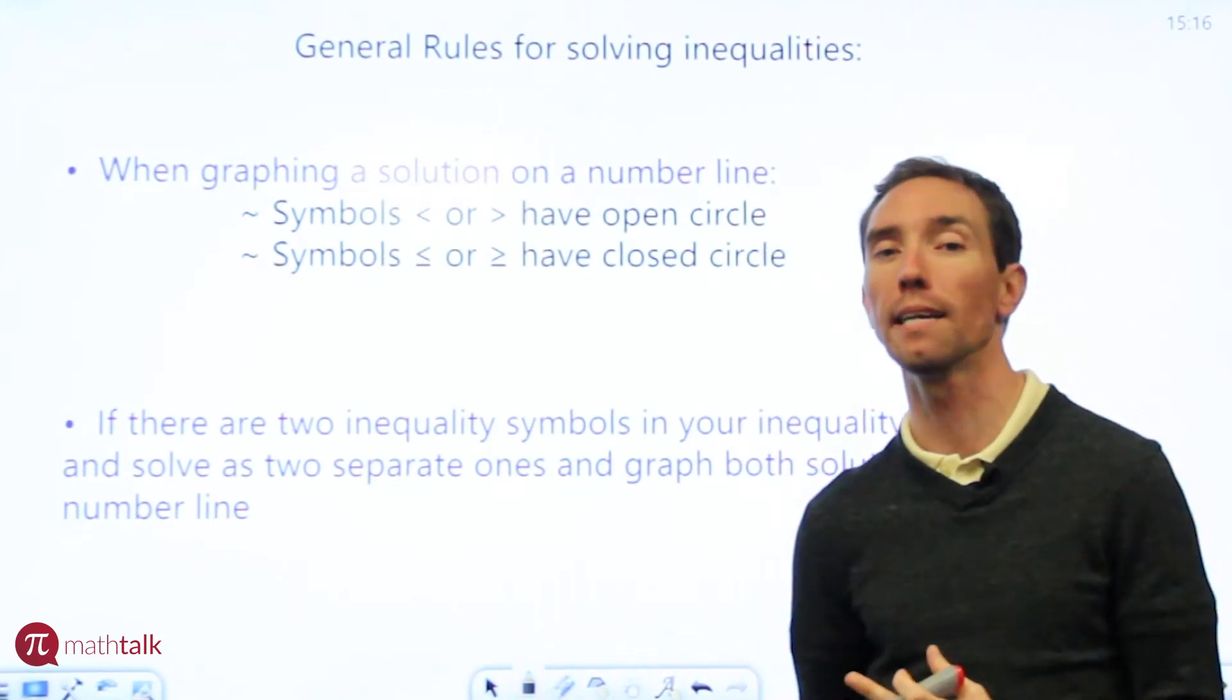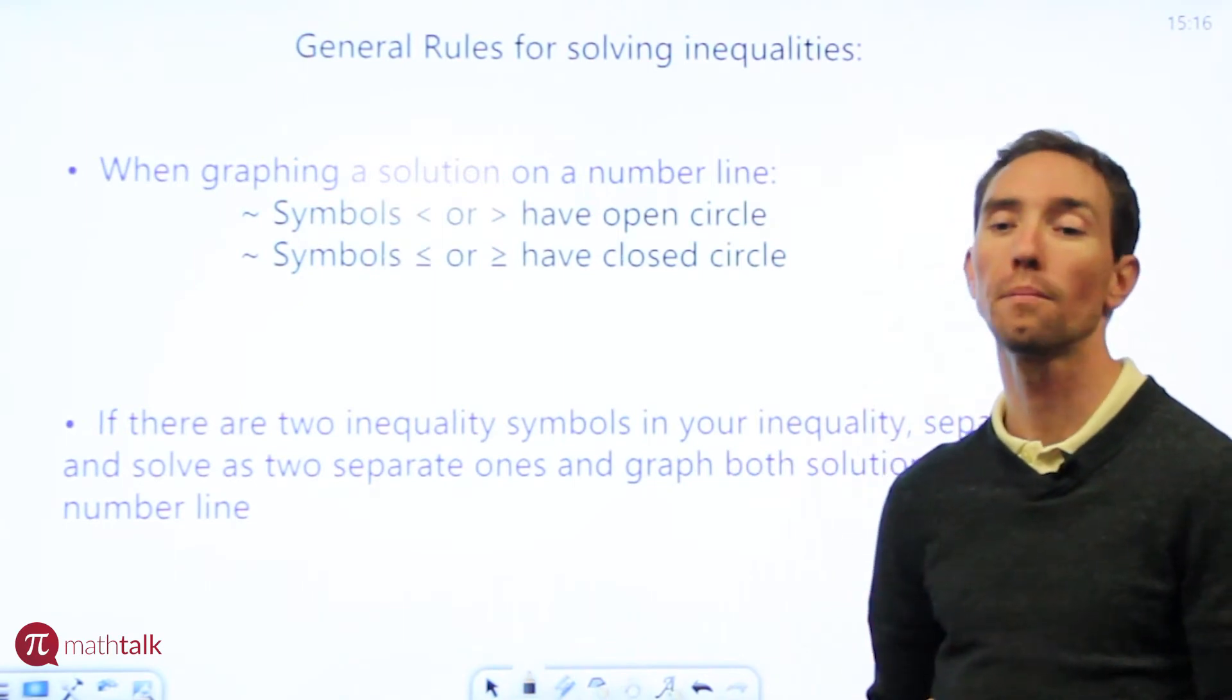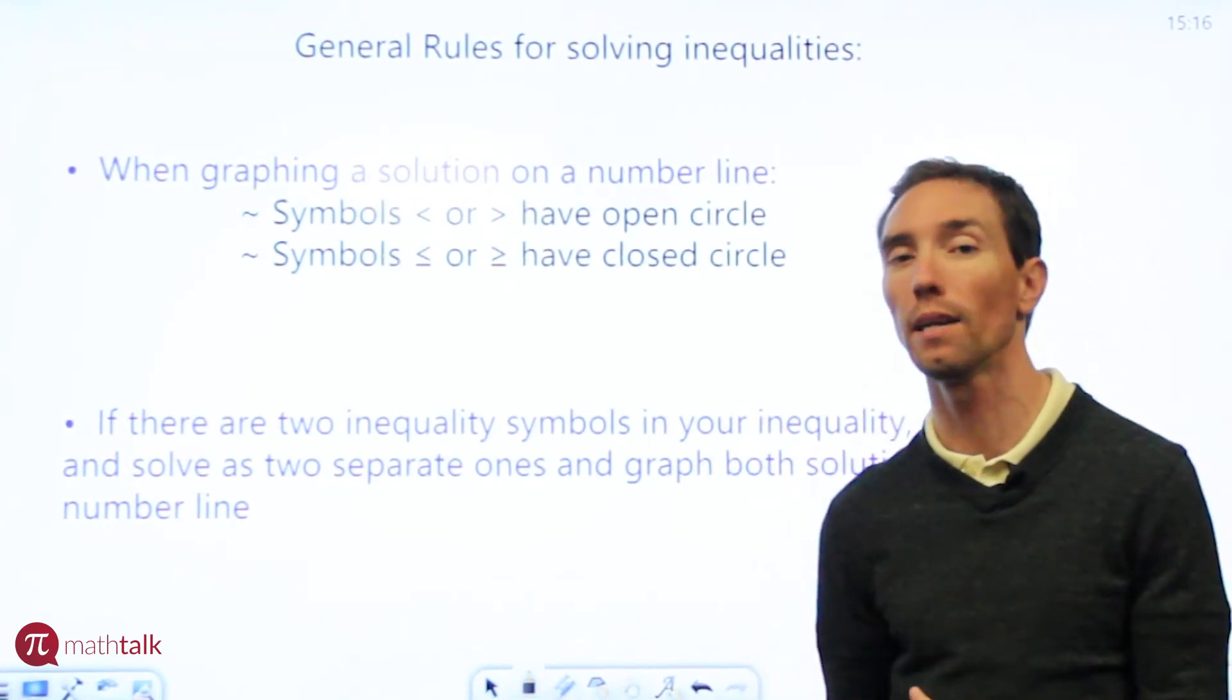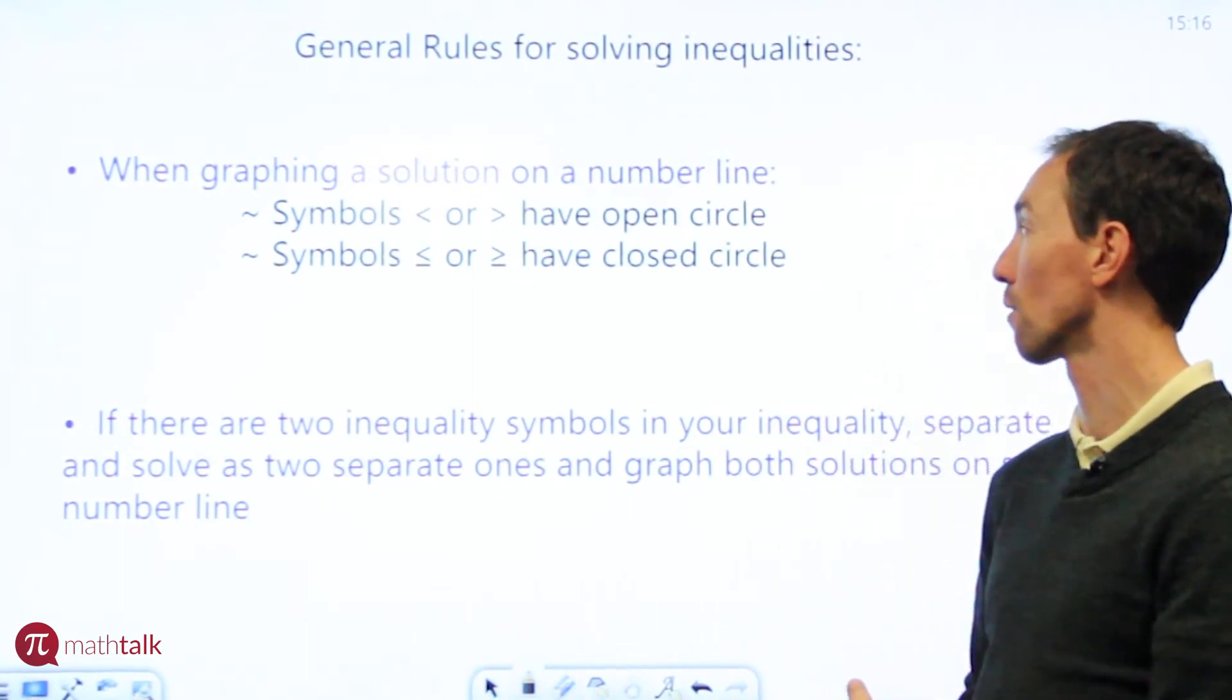The open circle really means that it includes all the data except that number. The closed circle represents all the data including that number depending on which direction you draw your arrow. And again we'll get into solving that in a little bit.